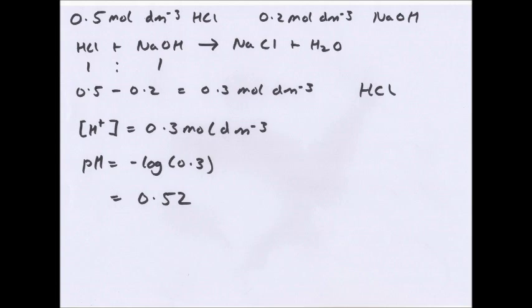What happens when you mix an acid and a base — a neutralisation reaction? Here we have 0.5 mol dm⁻³ HCl with 0.2 mol dm⁻³ NaOH. Write out the equation — it's a one-to-one ratio, so every mole of HCl reacts with one mole of NaOH. The 0.2 mol of NaOH all reacts with 0.2 mol of HCl to produce water and a salt, which have no effect on pH. You're left with 0.3 mol dm⁻³ HCl, so work out pH from there.